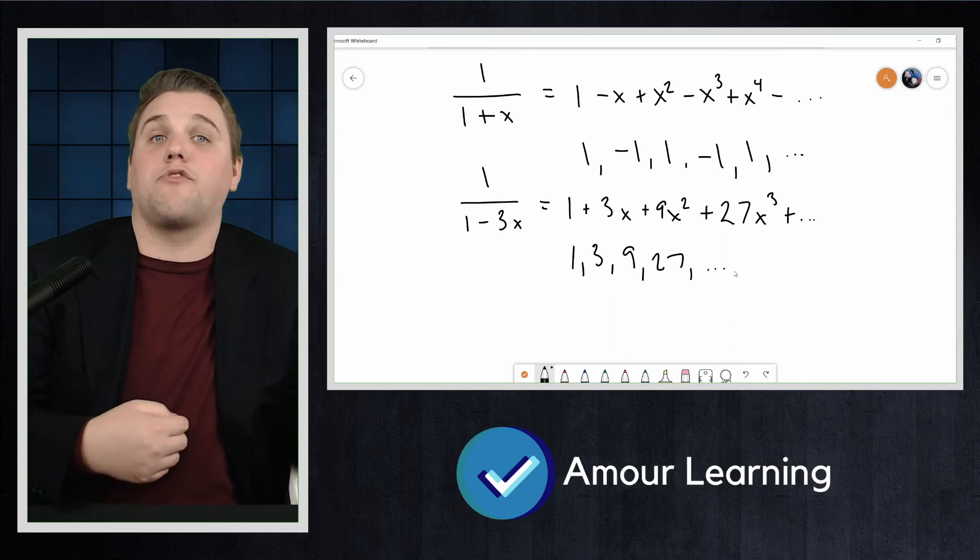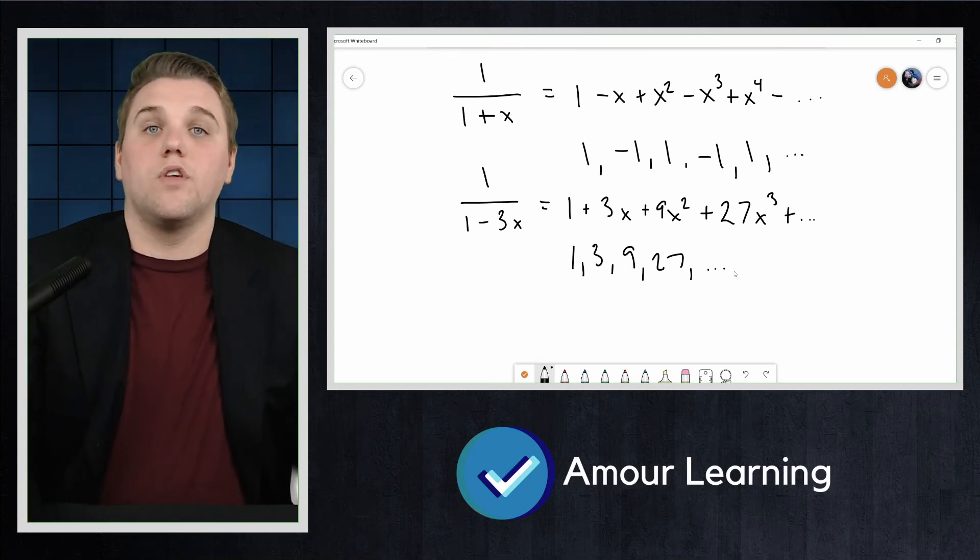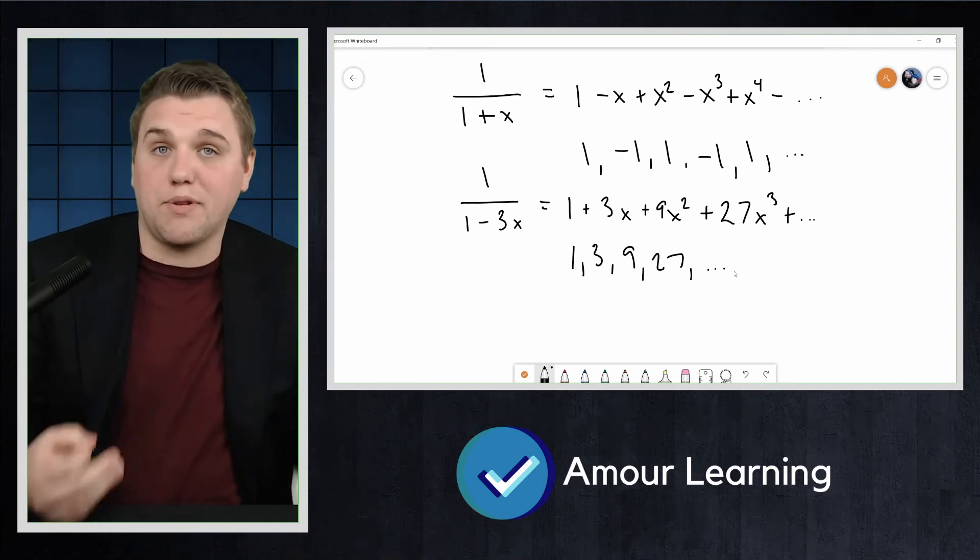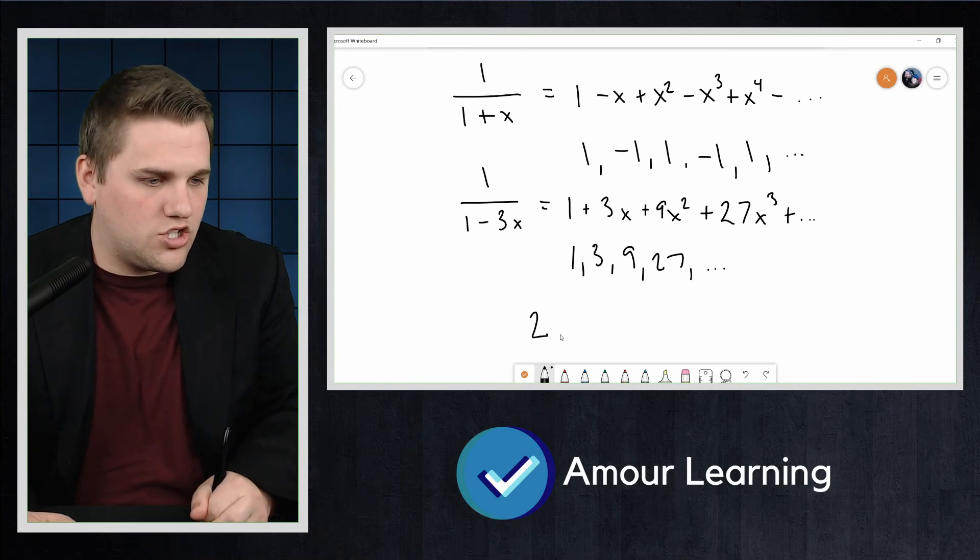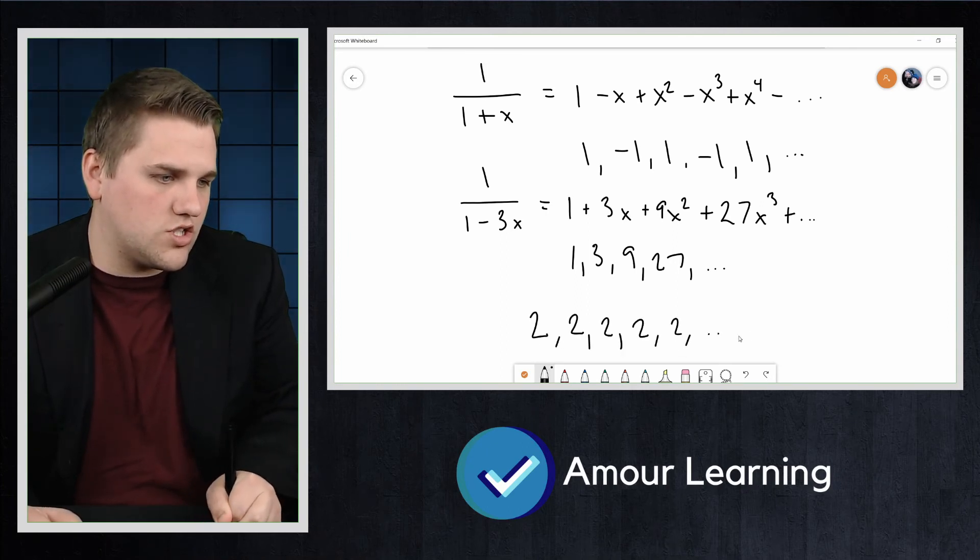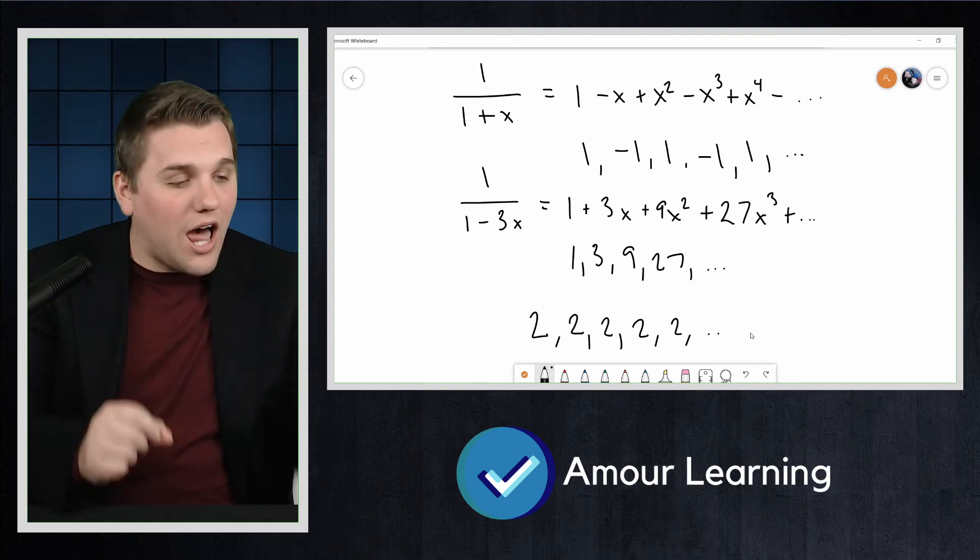By replacing x in 1/(1-x), we can get generating functions for a variety of sequences, but not all. For example, you cannot plug in anything for x to get the generating function for 2, 2, 2, 2, 2, and so forth. However, we are not lost yet.